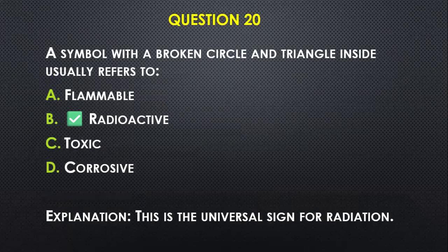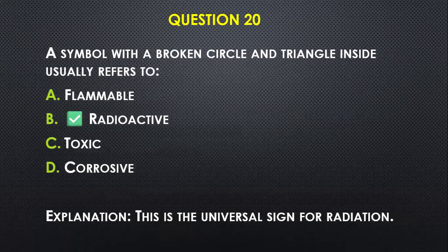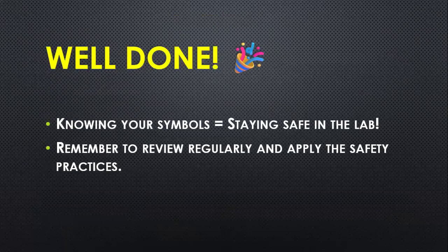Question number twenty: A symbol with a broken circle and a triangle inside usually refers to — A) flammable, B) radioactive, C) toxic, D) corrosive. That particular symbol is called the trefoil symbol and is the universal sign for radiation.